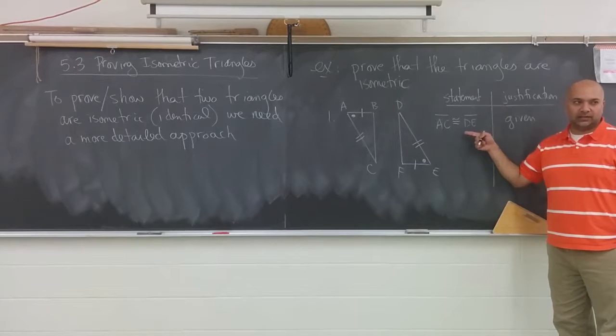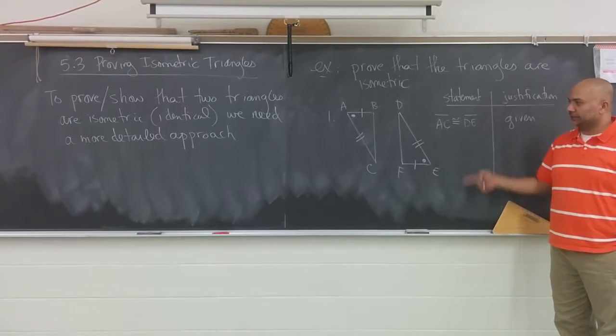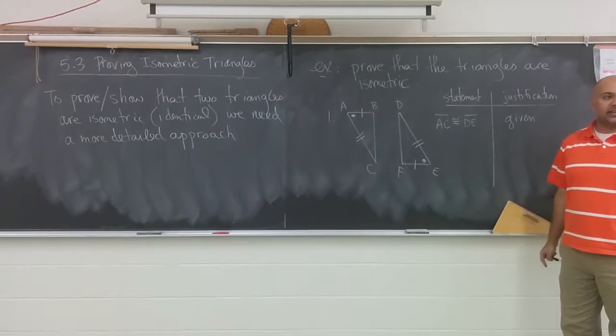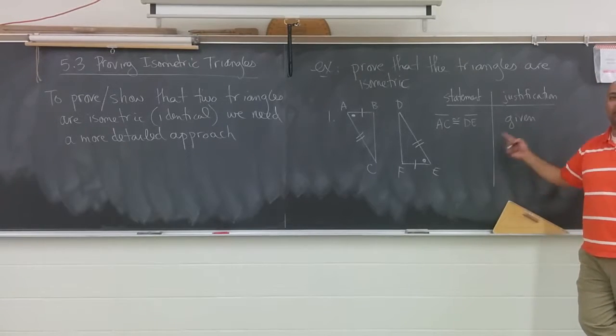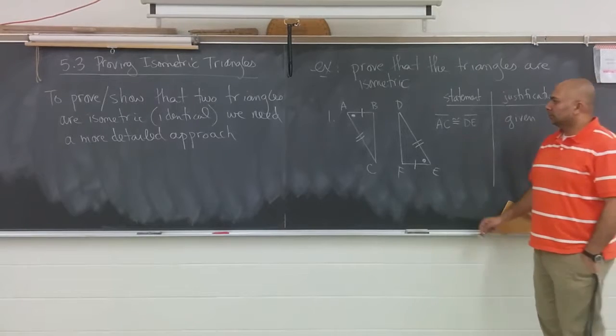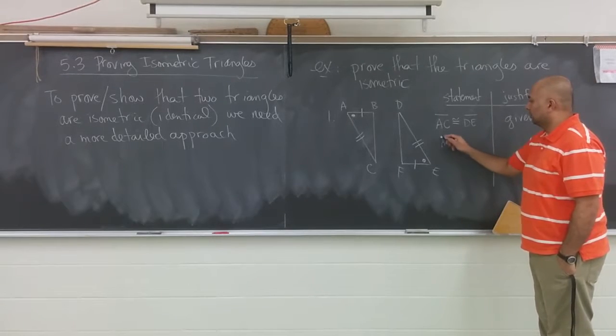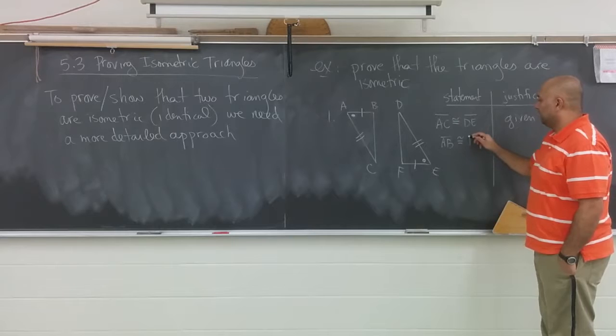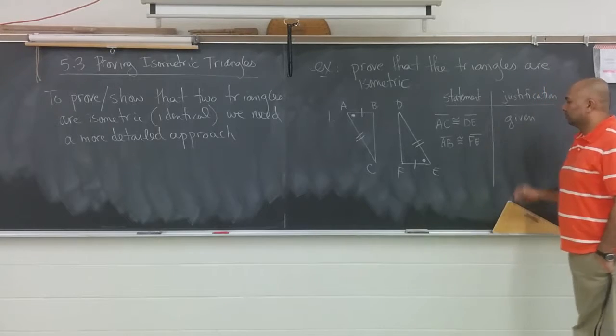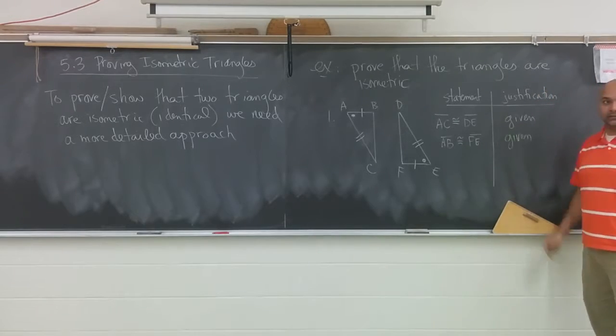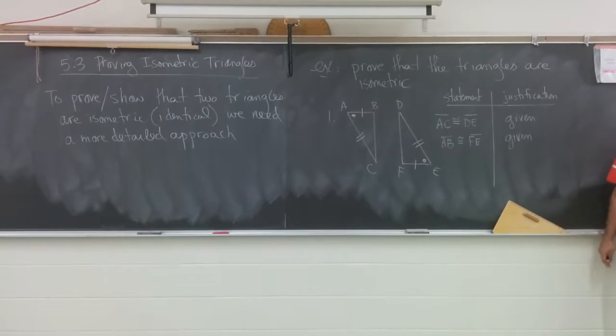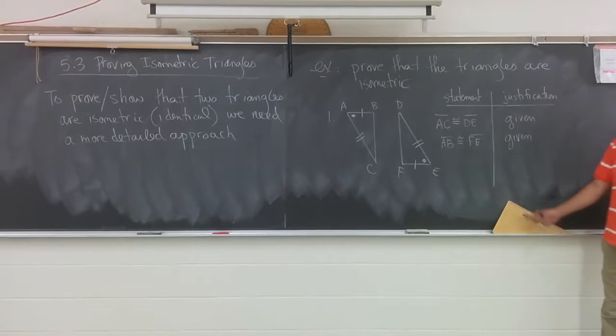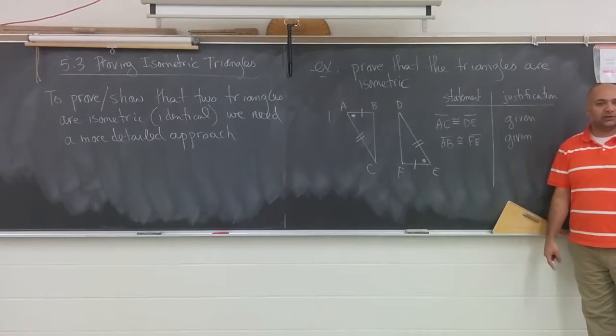So with that idea, I think we may have an idea where we're going to go next. What could we say next? What other combination of angles or sides do we know? And then what would be the reason? AB congruent to FE. And what's your reasoning? Given. Perfect. This is a rigorous proof. You could show this to Harvard professors and they'd be like, oh yeah, that's good.